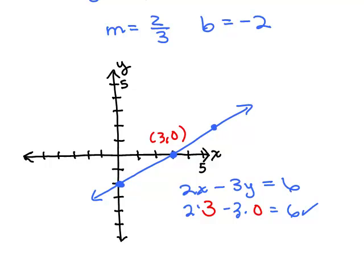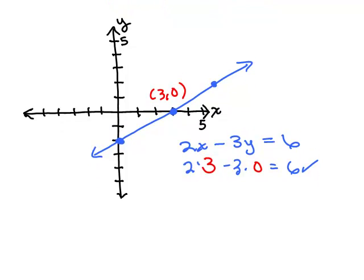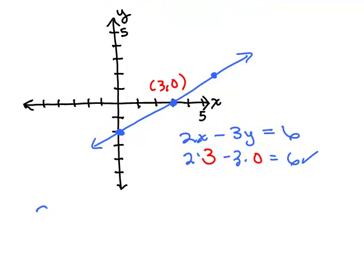By the way, you could have graphed this line by getting the x and y intercepts. In fact, that's how I probably would have done this equation. Just keep in mind that is another way to graph. Remember, first you put in 0 for x and figure out what y is.